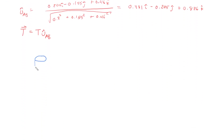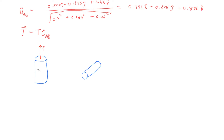For the free body diagram of body A: the body cannot move in the X direction and cannot move in the Z direction, so there are reaction forces RAX and RAZ in those directions. The body can move freely in the Y direction, where the applied force P acts. The tension T points in the direction defined by unit vector UAB. You can define reaction forces in the negative direction if convenient — as long as you remain consistent with signs in your equations, you'll get the same answer.